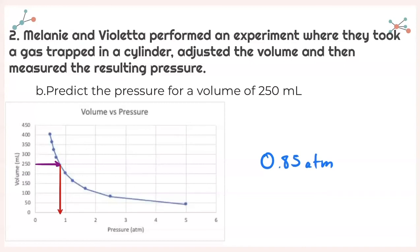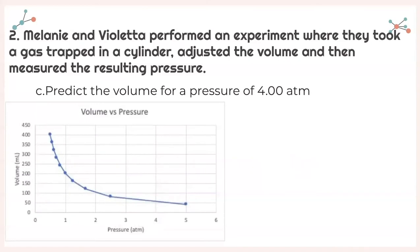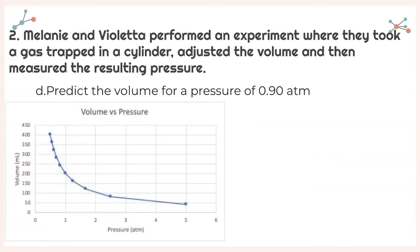These are all predictions based on our graph, so as long as you get something close, it's fair. For part C, predict the volume for a pressure of 4.0 atmospheres — looking at the graph, that's about 50 milliliters. For part D, predict the volume for a pressure of 0.90 atmospheres — looking at 0.9 atmospheres and tracing to the y-axis, I'm going to say about 225 milliliters. Again, my graph might be different than yours, so as long as we're close.